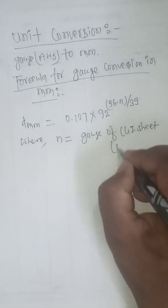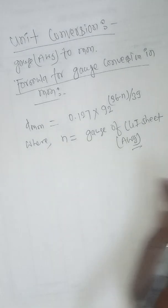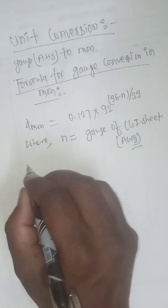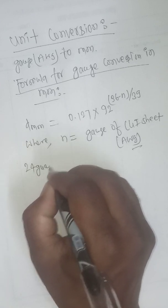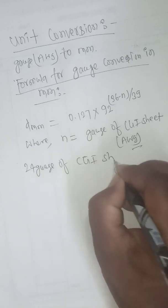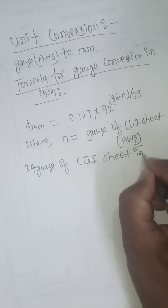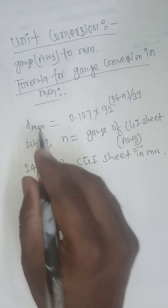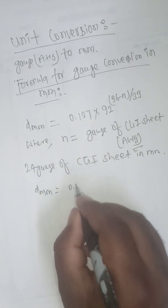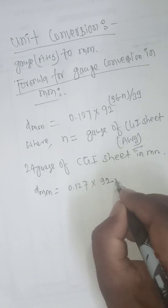Okay, first we find 24 gauge in mm, right? 24 gauge, d_mm is equal to 0.127 times 92, where n is gauge of CLR sheet (AWG).